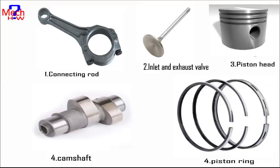Eight, connecting rod. It interconnects the piston and the crankshaft and transmits the gas forces from the piston to the crankshaft. The two ends of the connecting rod are called the small end and big end. The small end is connected to the piston via the gudgeon pin, and the big end is connected to the crankshaft by the crank pin.